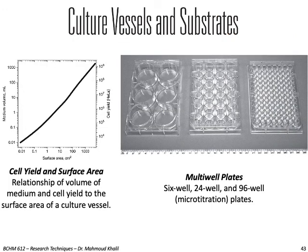We'll talk briefly on culture vessels and substrates. Generally, cell yield is directly proportional to the surface area. There are many culture vessels available. You can see in this figure the 6-well, 24-well, and 96-well micro-titration plates used for cell culture.